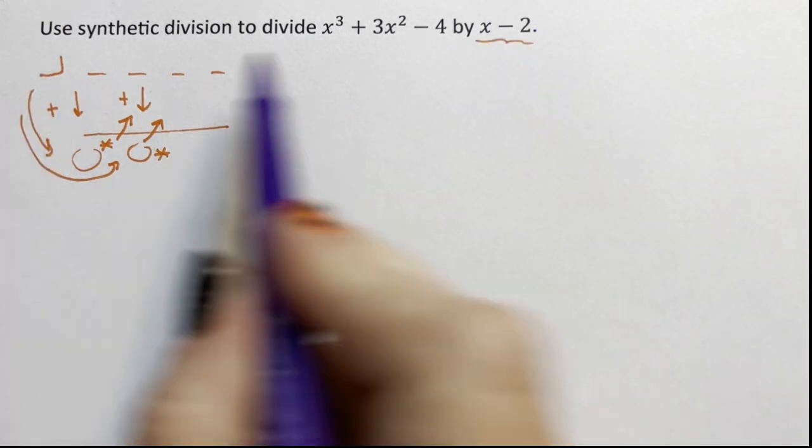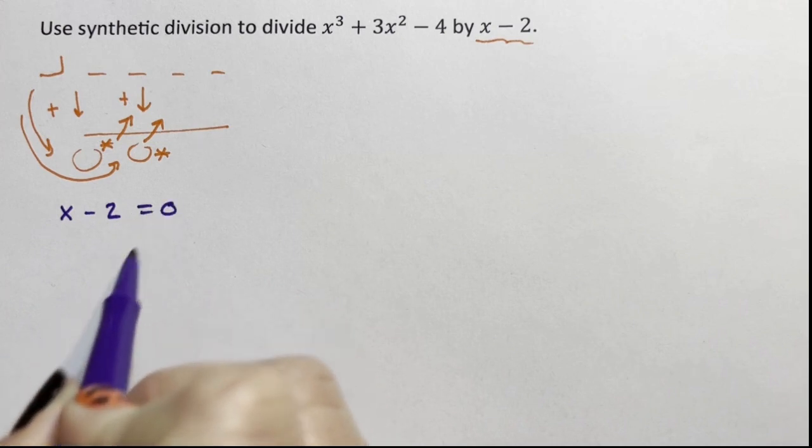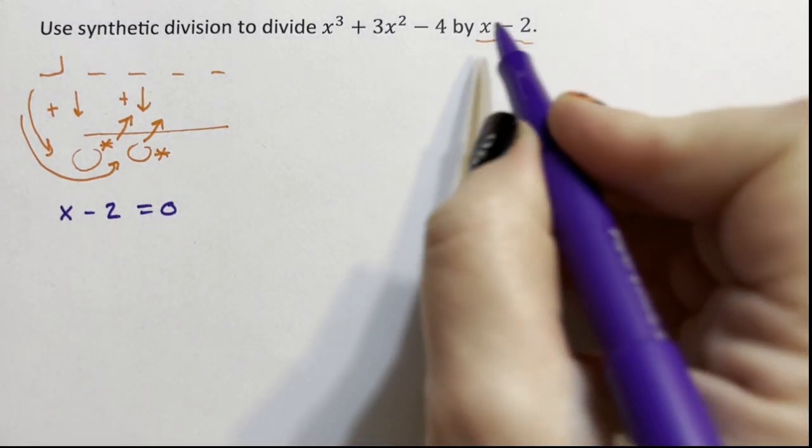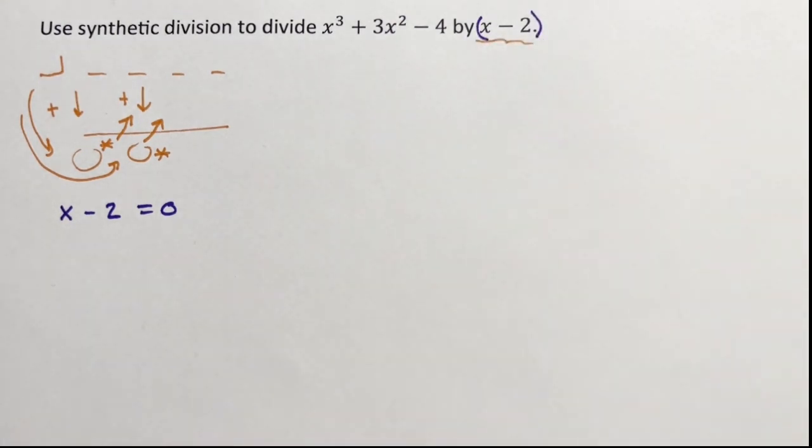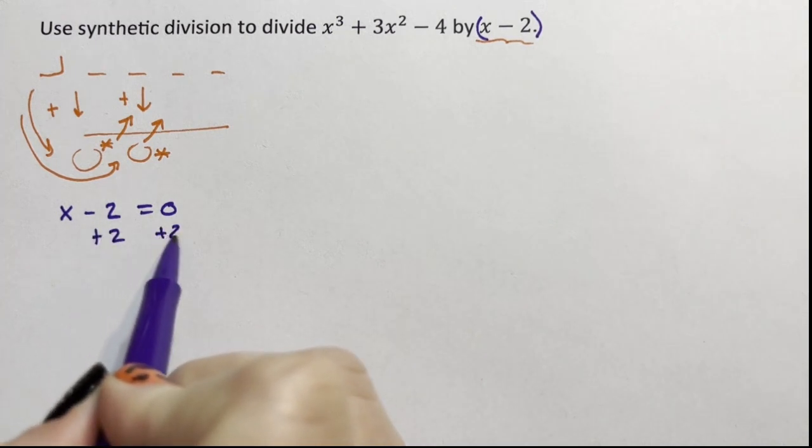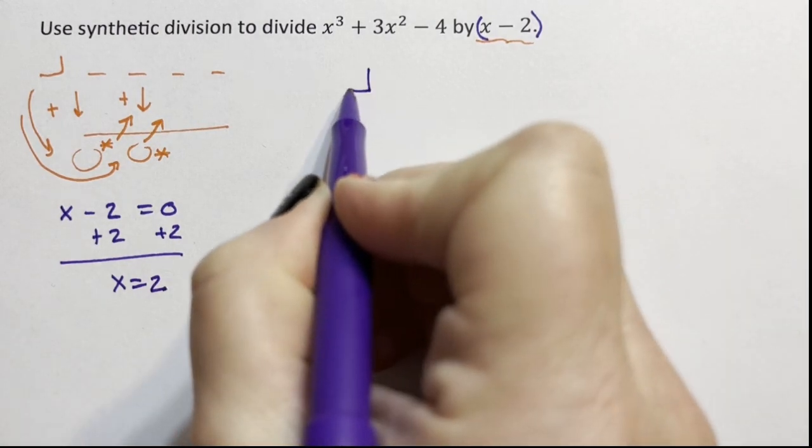First of all, what we put in the box is what makes x minus 2 equals 0. That is almost always the case. This is essentially the parenthesis, the factor, and we always want to know what makes that parenthetical phrase 0. So we add that 2 over and it's x equaling 2. So we'll put 2 in our box.